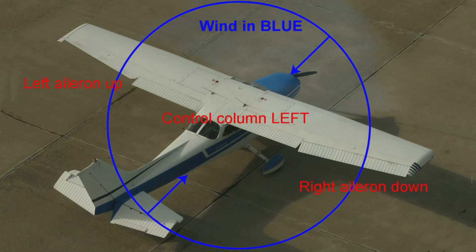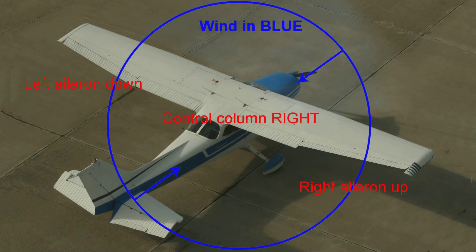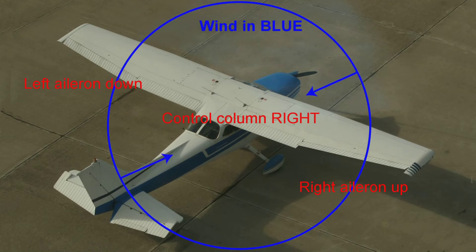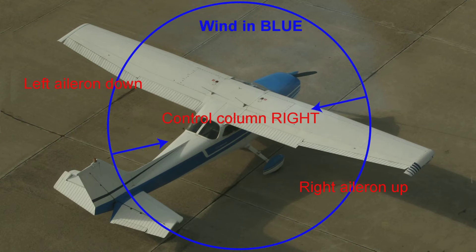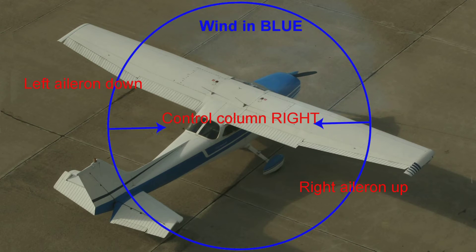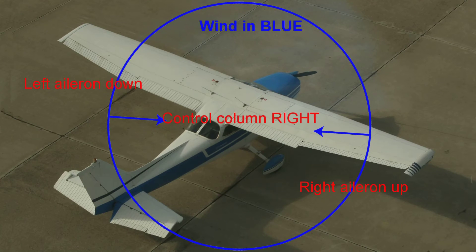As the wind comes around and passes your nose or your tail, the situation flips. Now with the wind ahead of you to the right, we need the right aileron up and the left one down, and that would be the same with the wind behind you to the left.